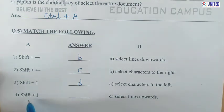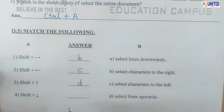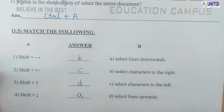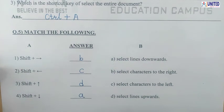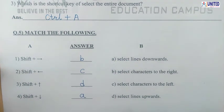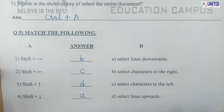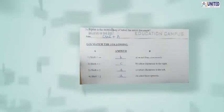Number 4: Shift+Down Arrow key — select the lines downwards. So the answer is A. So students, here we finish our exercise sheet number 5, Learn to Use MS Word 2007. That's all for today. Thank you.